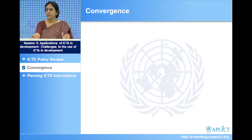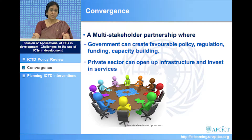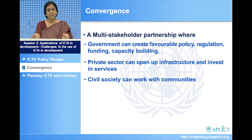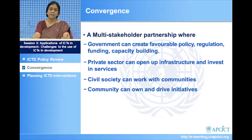The partnership must include government — which creates favorable policy and regulation, provides capacity building and funding, and is a major stakeholder — the private sector to open up infrastructure, invest in services, build information highways, and provide services cost-efficiently, and civil society working with communities so communities themselves begin to own and drive initiatives, lending sustainability and empowerment. ICTs do challenge the existing order, but by challenging it, come up with new synergies by which we can achieve our goals even better.